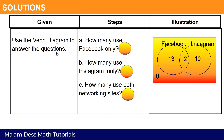Now let us use the Venn diagram to answer the questions. A: How many use Facebook only? There are 13 students who use Facebook only. B: How many use Instagram only? Under Instagram, we have 10. C: How many use both networking sites? On the intersection, we have 2.